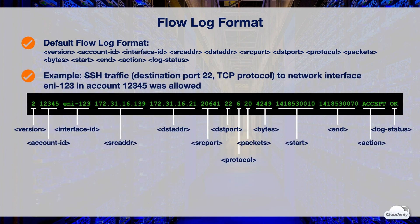In this example, the flow log captures SSH traffic with destination port 22 and TCP protocol number 6, on the example network interface, from the source address 172.31.16.139 to the destination address 172.31.16.21, and the action was allowed.